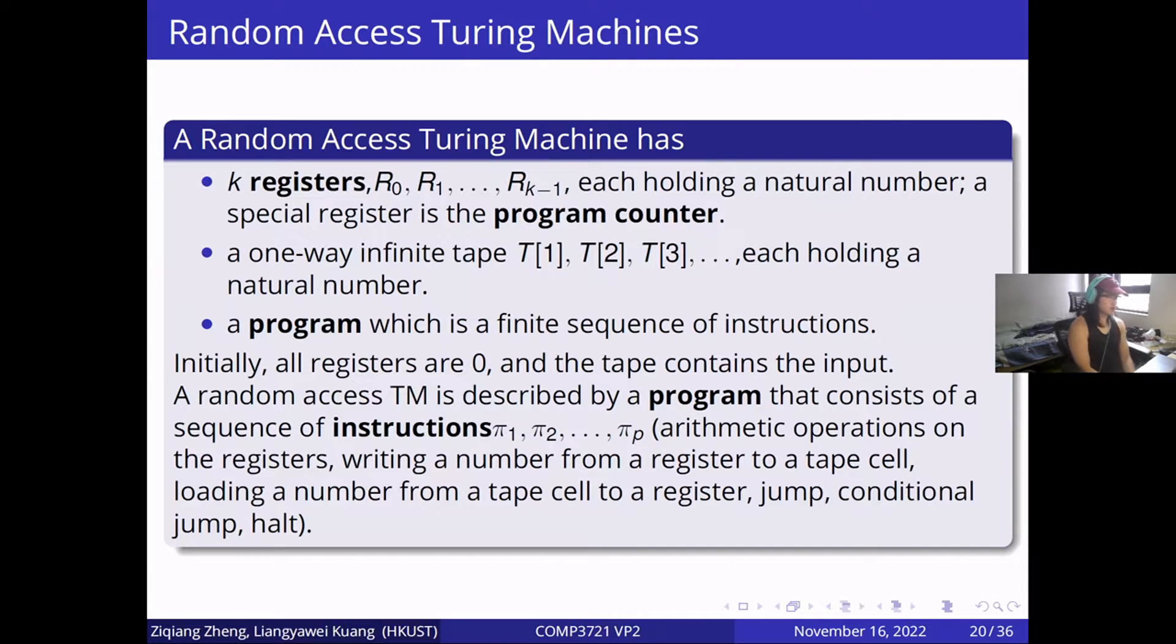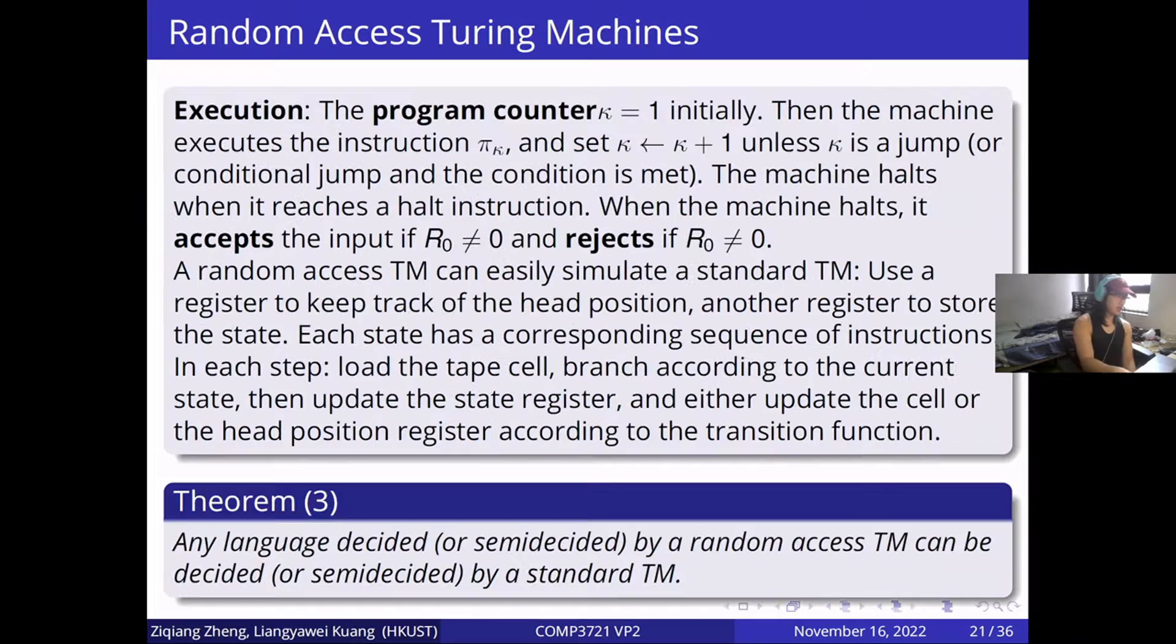A random access Turing machine has key registers, a program counter, a one-way infinite tape, and a program. It is described as a program that consists of a sequence of instructions. Any language decided or semi-decided by a random access Turing machine can be decided or semi-decided by a standard Turing machine.